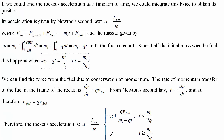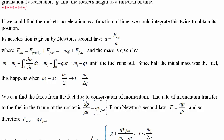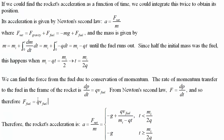We find the force from the fuel using conservation of momentum. The rate of momentum transferred to the fuel in the frame of the rocket is dp/dt = q · v_fuel. Checking units: q is mass per time, velocity is meters per second, giving mass times velocity per time — a momentum per time. From Newton's second law, force equals rate of change of momentum, so the force on the rocket from the fuel is F = q · v_fuel. That's true for rocketry in general.